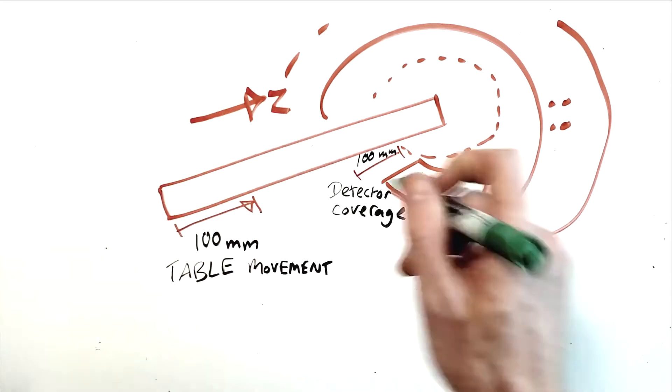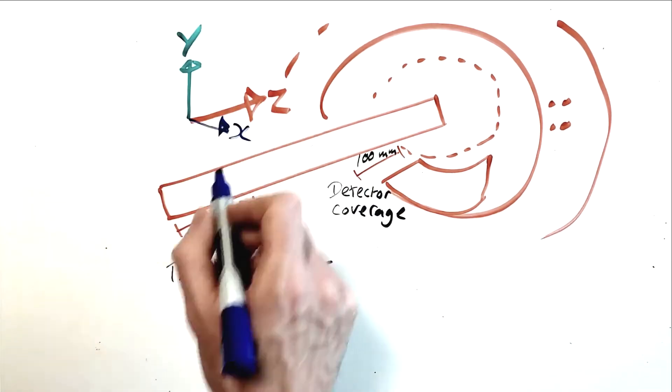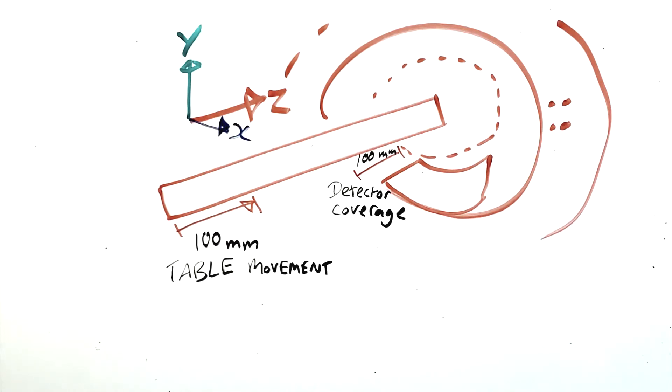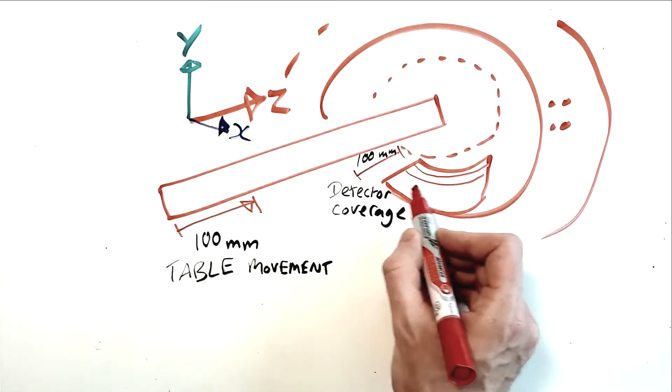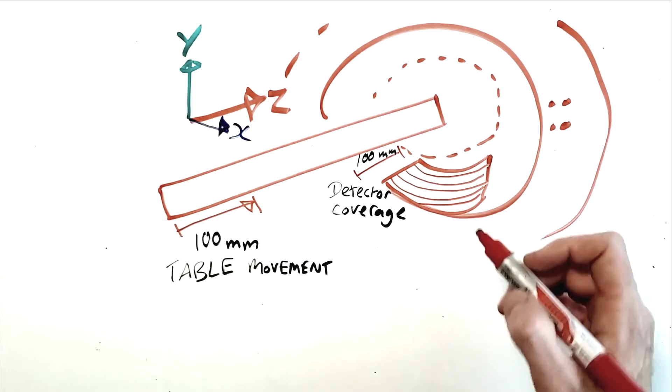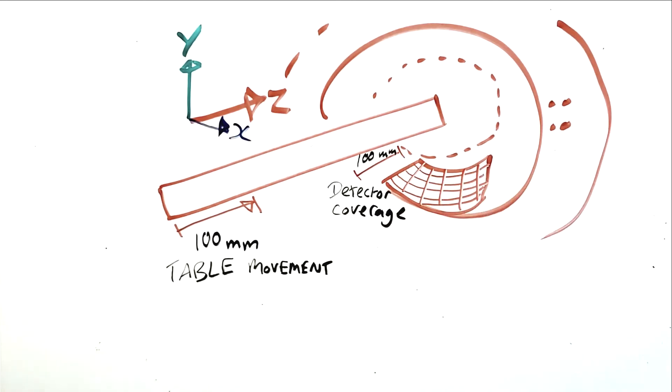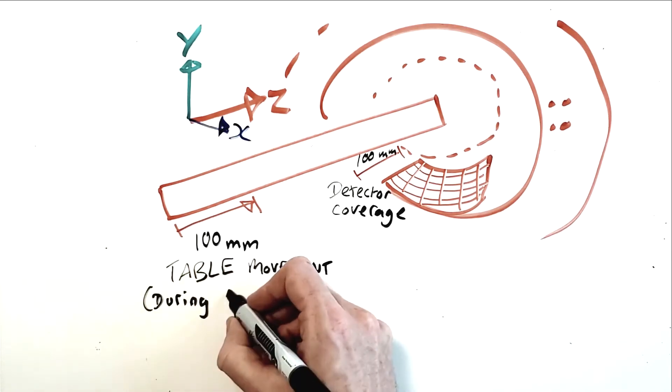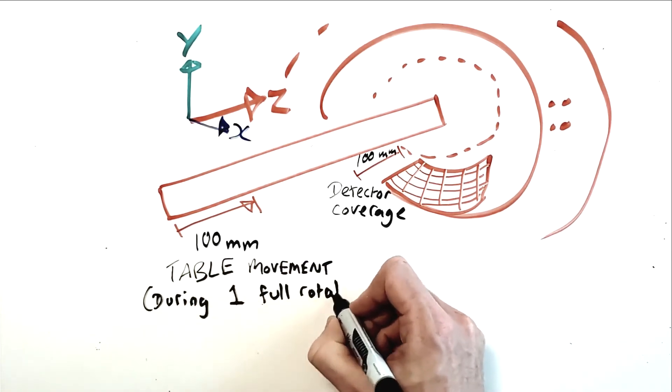However, acquisition does not always occur in this way. Pitch is a parameter which we can manipulate, and it may be greater or lower than 1 depending on our needs. Pitch is defined as the z-axis table distance travelled during one full gantry rotation, divided by the z-axis detector area coverage.